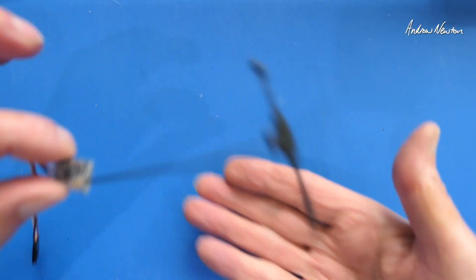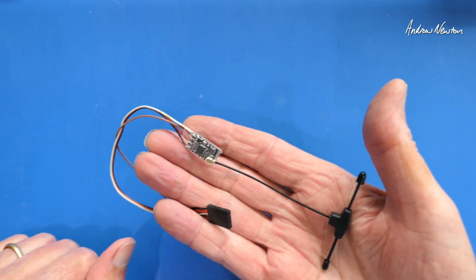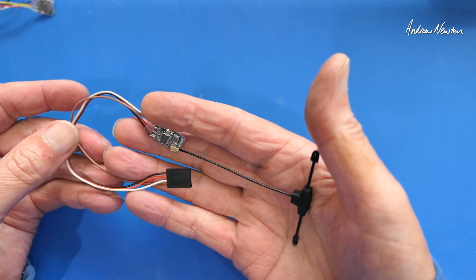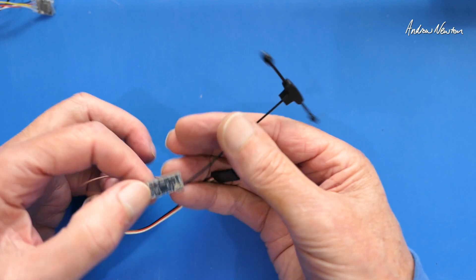But for connecting to a flight control board, I think this is the one I prefer. This is the sort of style I prefer. It just makes it easier to mount it on your plane. And you'll still easily get 10 kilometers range out of this one without too many problems at all.